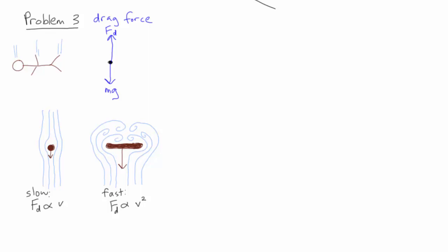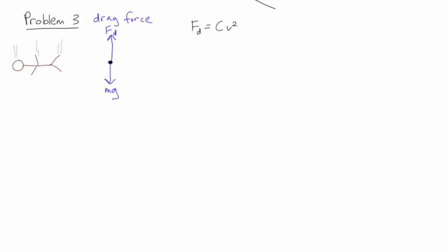But for a large, fast-moving object, the movement of the air around the object will be turbulent, and here the drag is proportional to the speed squared. A skydiver is large and fast-moving, so we can express the drag as Fd equals C times v squared, where v is the speed and C is a constant, which depends on things like the air density, the shape of the skydiver, and so on.